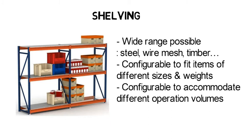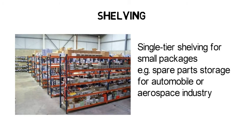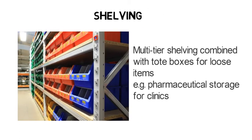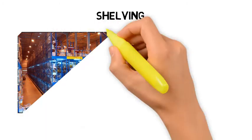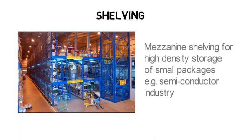In one example, single-tier shelving is used to store small packages, e.g. spare parts storage for the automobile or aerospace industry. In another example, multi-tier shelving is used in combination with tote boxes to store loose items, e.g. pharmaceuticals for a chain of clinics. In another example, a three-level mezzanine shelving system is used for high-density storage of small packages. The mezzanine is equipped with staircases and even lifts to facilitate accessibility of workers and transfer of goods. This is sometimes seen in the semiconductor industry.